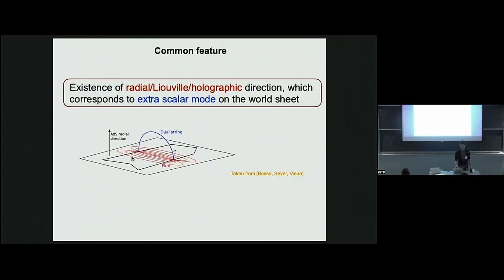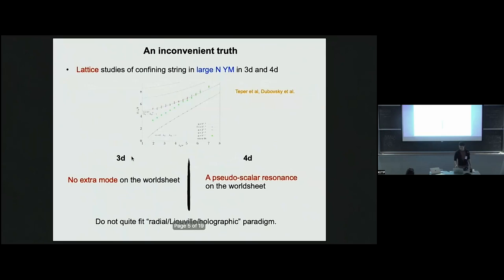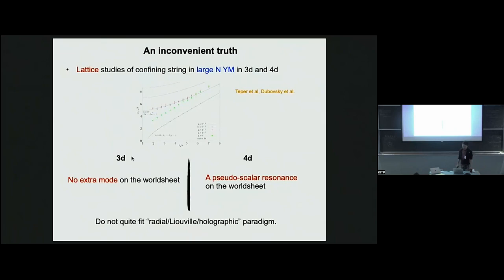However, there is one inconvenient truth. In recent years people have been studying the confining string in large-N 3d or 4d Yang-Mills using the lattice, famously led by the group led by Teper. What they found through lattice studies is that in three dimensions they don't see any extra mode on the worldsheet, whereas in 4d they did see an extra mode, but it doesn't correspond to a scalar mode — it actually corresponds to a pseudo-scalar mode — so there is no obvious target space interpretation.